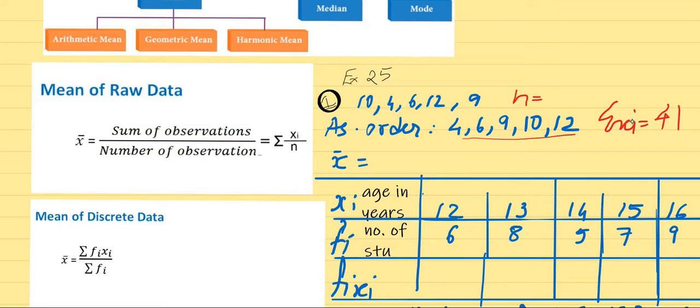4 plus 6 plus 9 plus 10 plus 12, so that will be 41. And how many observations do I have? That is the number of observations: 1, 2, 3, 4, 5. So my formula will be summation xi upon n, that is 41 by 5. So 41 by 5 is 8.2, and 8.2 is my mean in case of raw data.